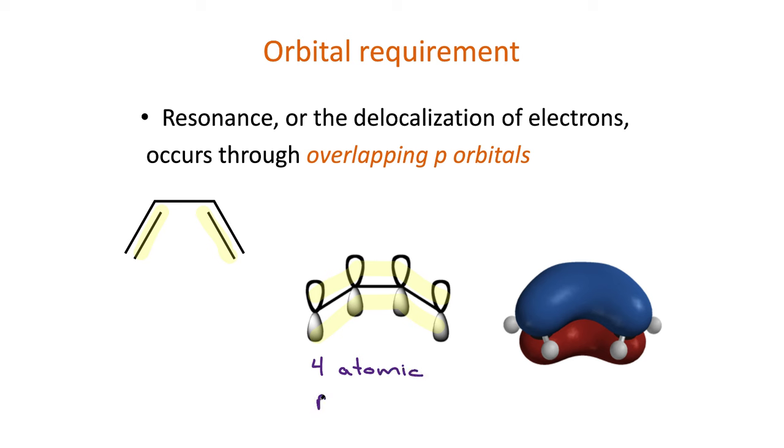If you remember from past lessons, atomic orbitals like these p orbitals will combine to form the same number of molecular orbitals. So the four atomic p orbitals overlapped to form four molecular orbitals. And I am showing only one of these molecular orbitals.